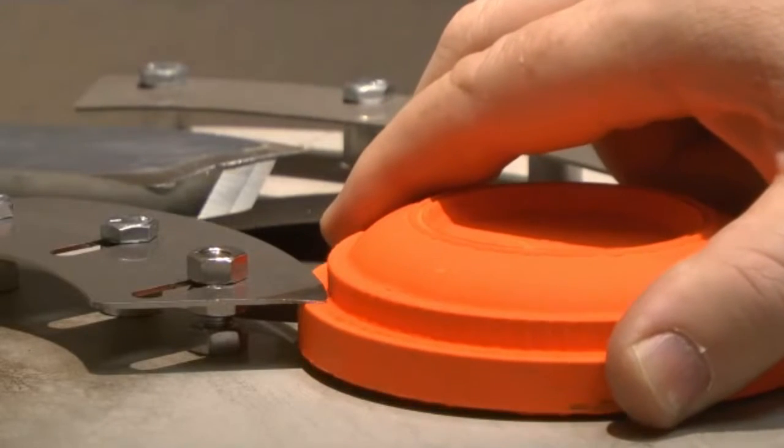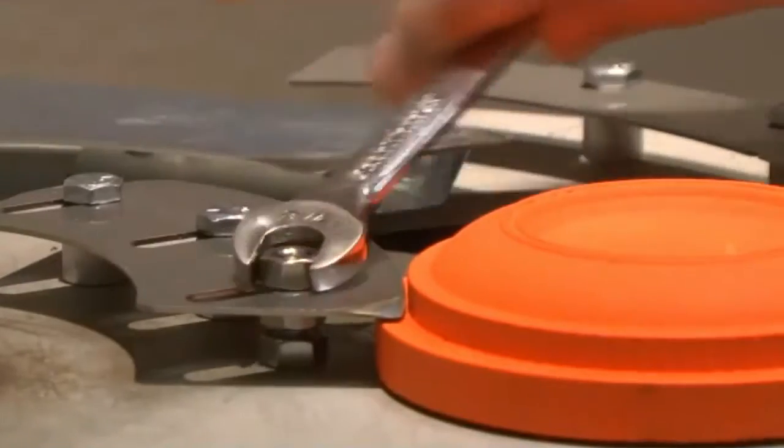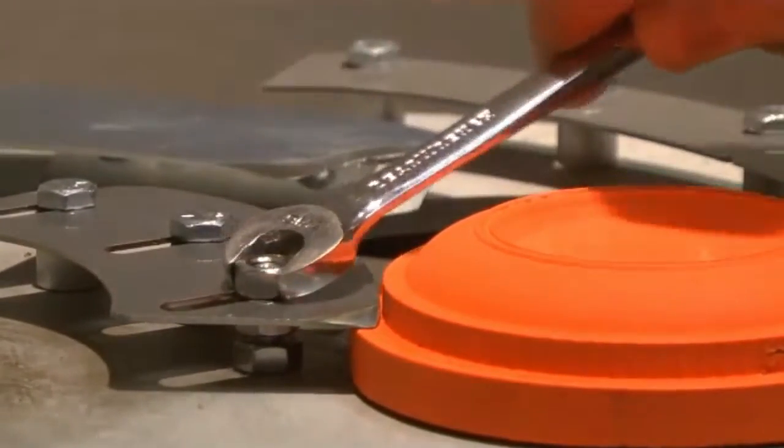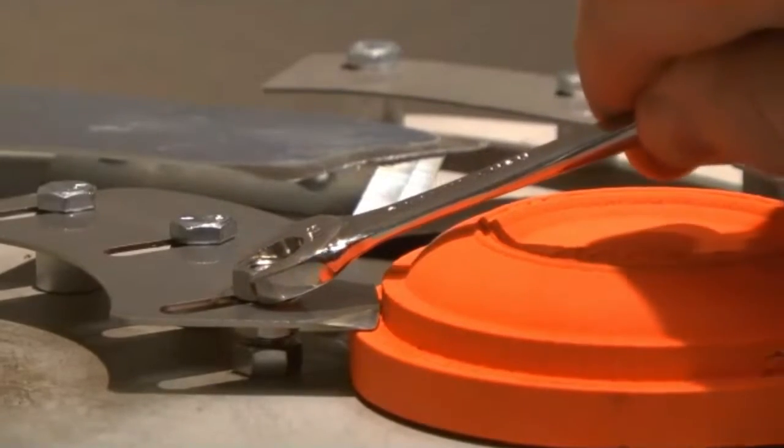Adjust the height of the inner knife separator with a 7/16th open ended wrench. Set the clearance the same as on the outer knife separator.